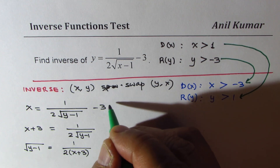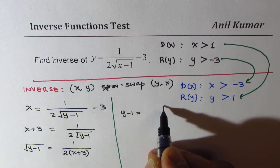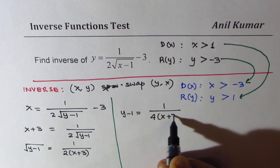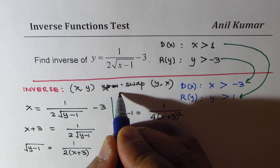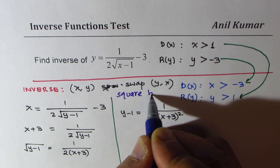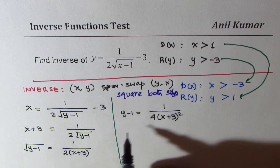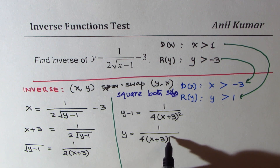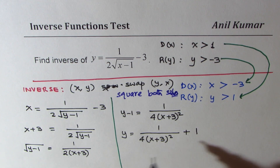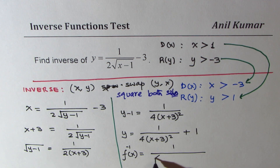Now we square both sides. Squaring gives y minus 1 equals 1 over 4 times (x plus 3) squared. We can then isolate y as 1 over 4 times (x plus 3) squared, plus 1. That becomes the inverse of the function: f⁻¹(x) = 1 over 4(x plus 3) squared, plus 1.